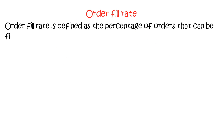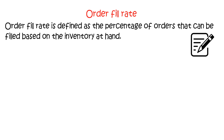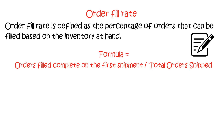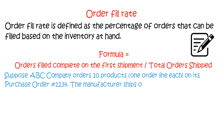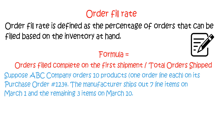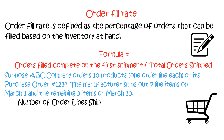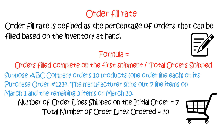Order fill rate is defined as the percentage of orders that can be filled based on the inventory at hand. The formula is orders filled complete on the first shipment divided by total orders shipped. Suppose ABC company orders 10 products. On its purchase order, the manufacturer ships out seven line items on March 1st and the remaining three items on March 10th. The number of order lines shipped on the initial order is 7 and total number of order lines ordered is 10, thus the order fill rate is 70 percent.